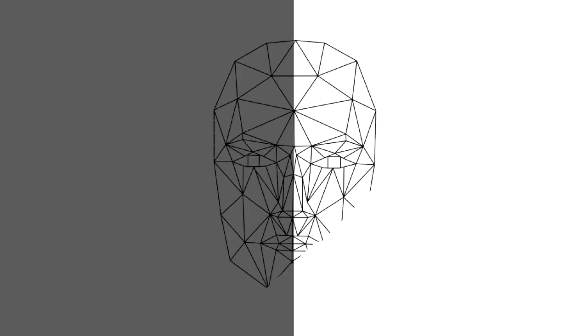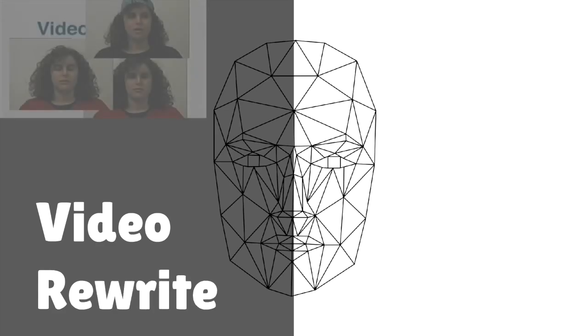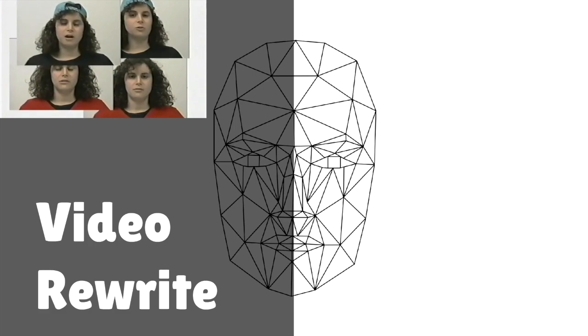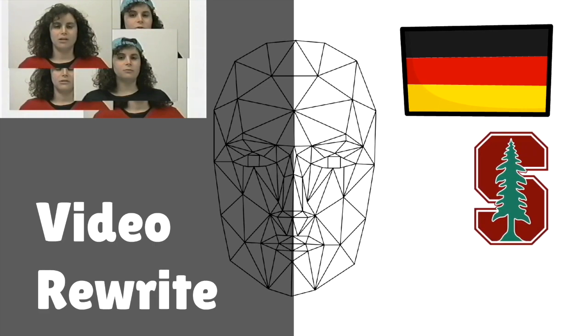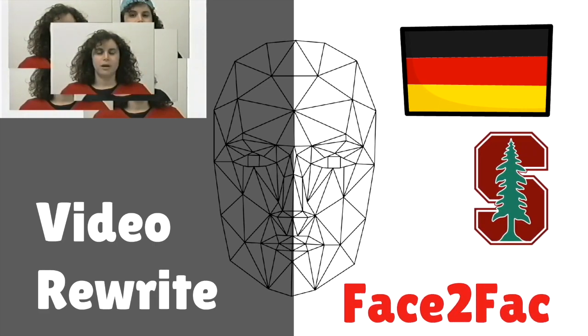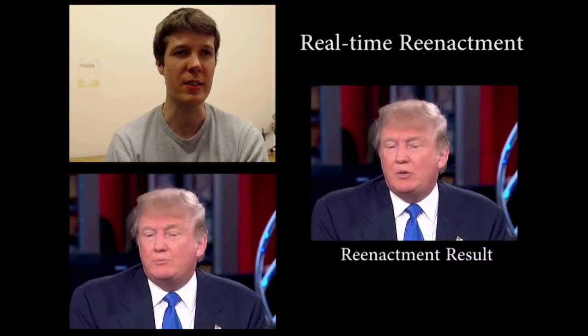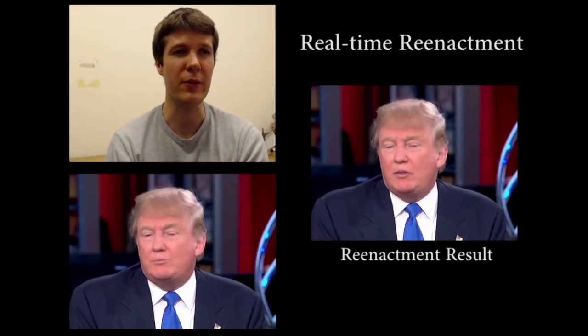The technology was first used in academic study during the late 90s in the Video Rewrite Project, which, although not appearing 100% realistic, demonstrated how the practice could work. A group of researchers from Germany and Stanford University later undertook a project called Face-to-Face in 2016, posting a YouTube video explaining how their technology worked and showing how realistic their deepfakes could be, using Presidents George W. Bush and Donald Trump as their targets. A year later, another video went even more viral, this time starring an artificial Barack Obama making a speech in his own voice, but taken from a different image.